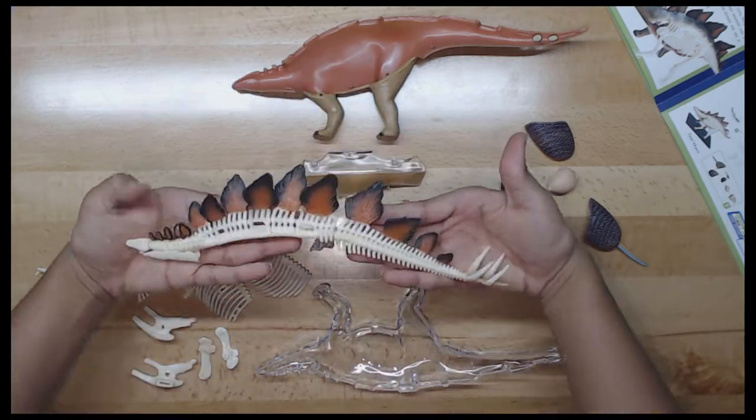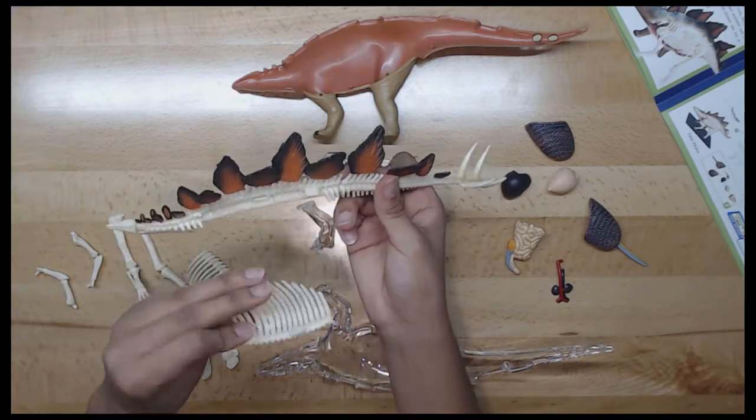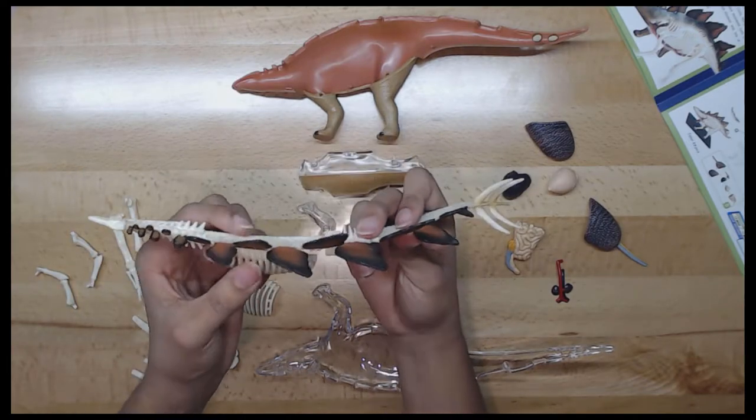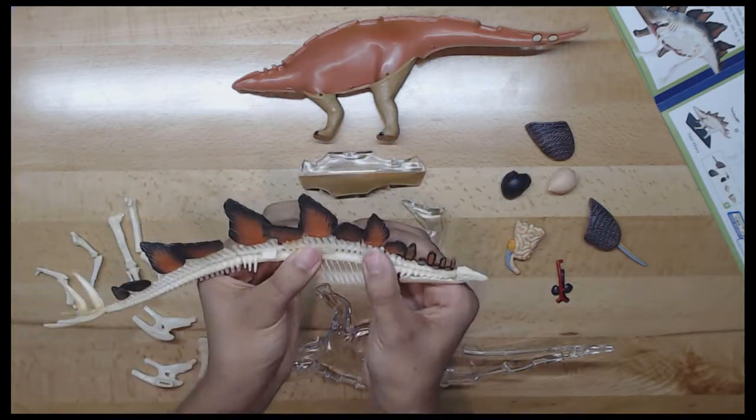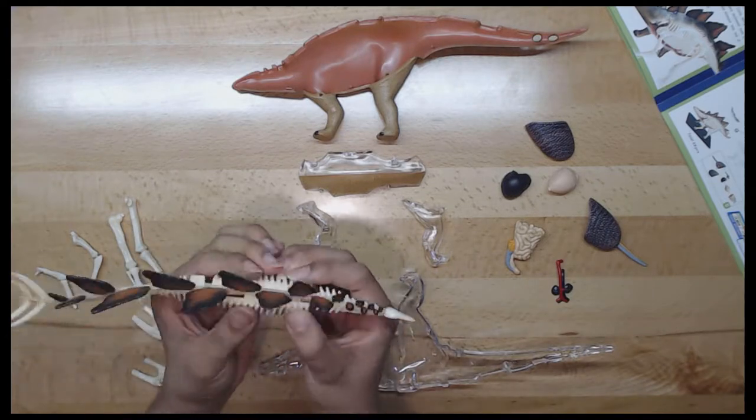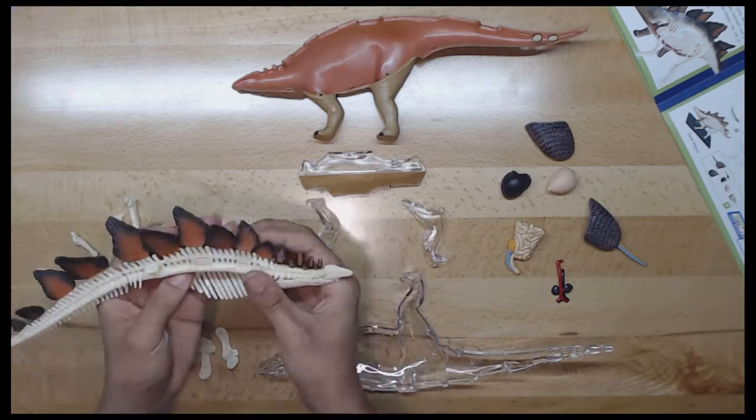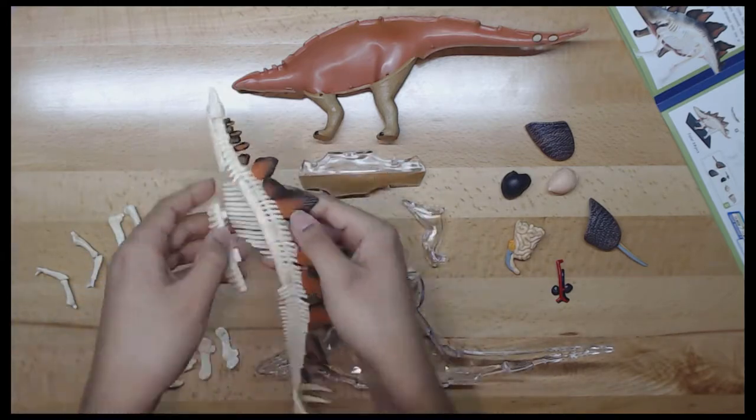Next is the bony plate. Stegosaurus had two rows of bony plates embedded along at the back of the tail and alternated in alignment. There were 17 in total. Paleontologists found that there were well-nourished blood vessels in the plates, which may help to regulate the body temperature. The bony plates may have also been used for protection or mating display purposes too.